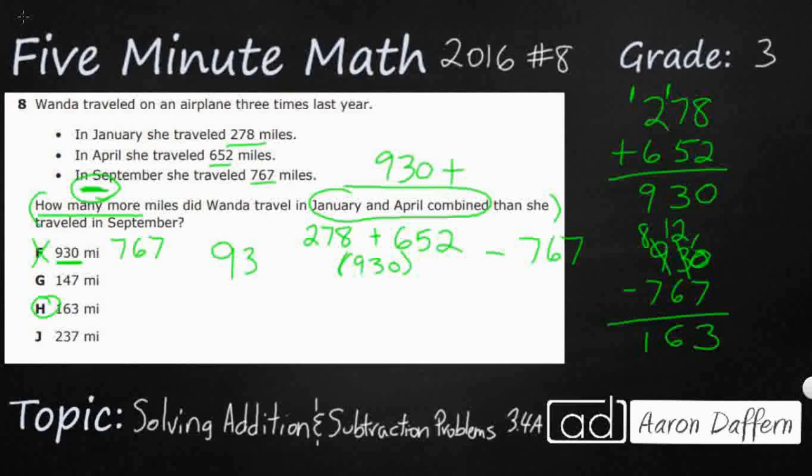Let's say you set that up correctly. You did all that work. You did 930 and you did 767. But you decided you did not feel like regrouping. I have seen a lot of students subtract like this: 0 minus 7 is 7, 3 minus 6 is 3, 9 minus 7 is 2. Well, guess what? That's an answer right here. But that is not how we subtract because there was no regrouping there at all. So our answer is going to be H, 163 miles.